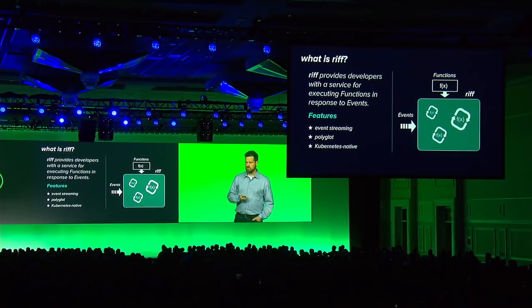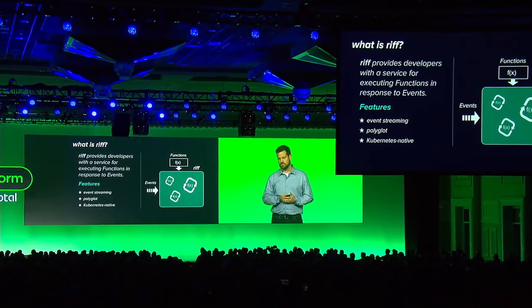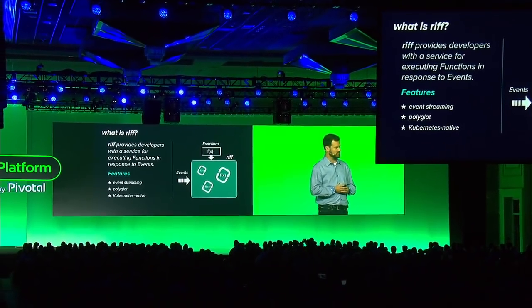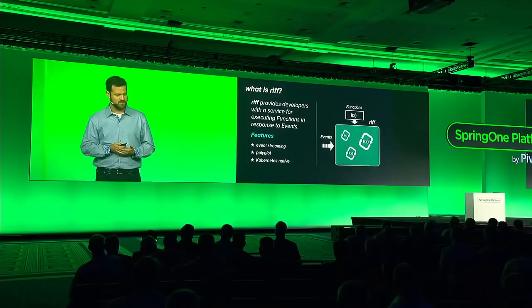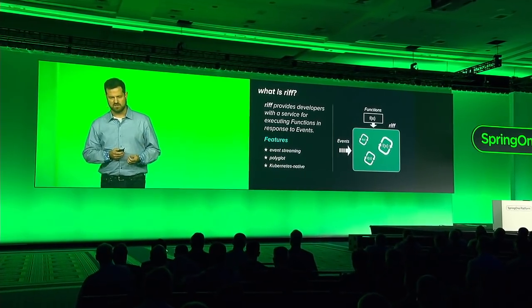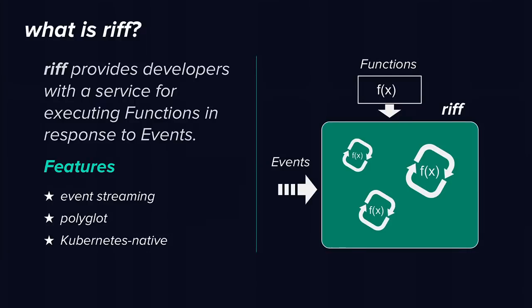Last year at SpringOne keynote, I introduced Project Riff as our open-source, event-driven function-as-a-service platform. I want to emphasize, while talking about how and why we've replatformed onto Knative, what things are the same and what things are different — and where things are different, hopefully I'll convince you they are different for good reasons. What's the same: we want developers to be able to focus on their functions, just the scope of function code and the events that trigger those functions.